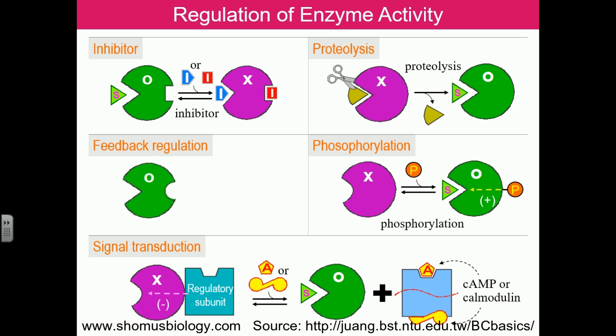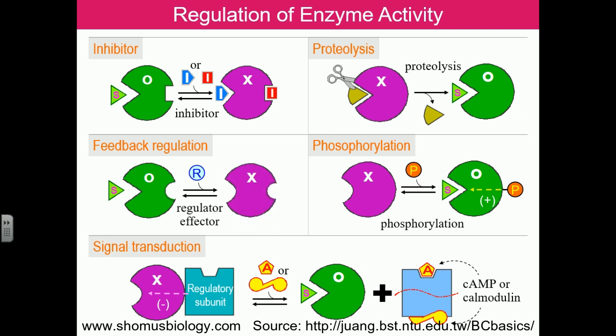Feedback inhibition involves at least two different sites on the enzyme: the active site and an allosteric regulation site. A second regulatory molecule binds to the allosteric site, and this binding can prevent the enzyme from being in its activated form. These represent the different modes of enzyme activity regulation.